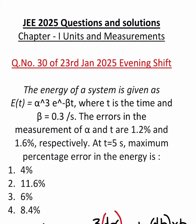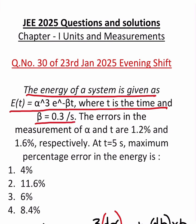The problem goes like this: the energy of a system is given as E(t) equals alpha to the power of 3, e to the power of minus beta t, where t is the time and beta is equal to 0.3 per second.